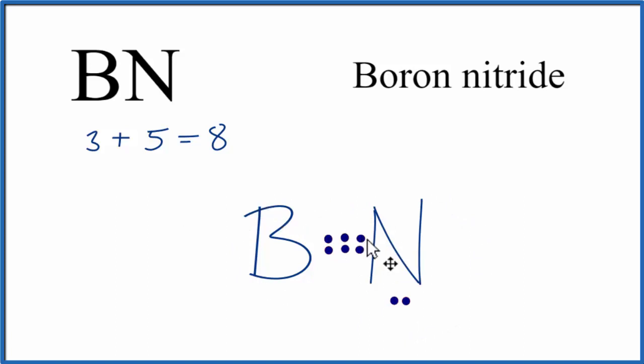And the boron, because it's an exception to the octet rule, it only needs 6 valence electrons. So this is the Lewis structure for BN. I'm going to move these valence electrons up here, it just feels better to me.